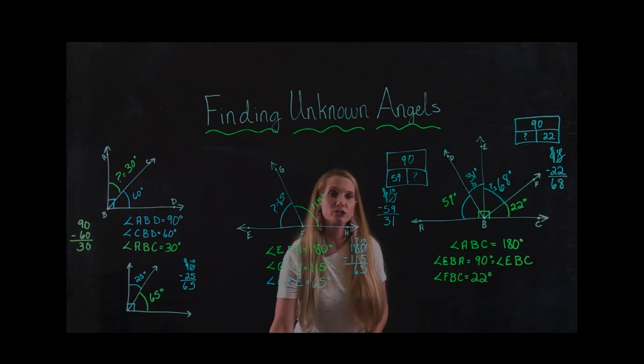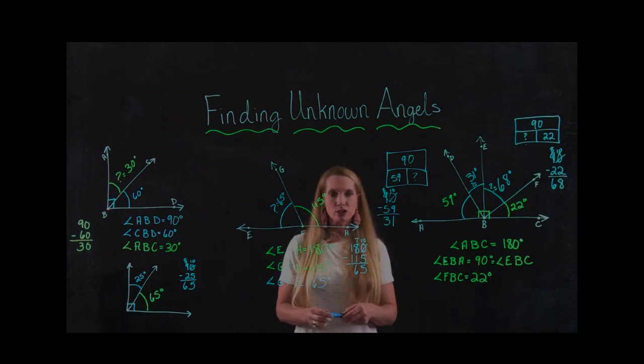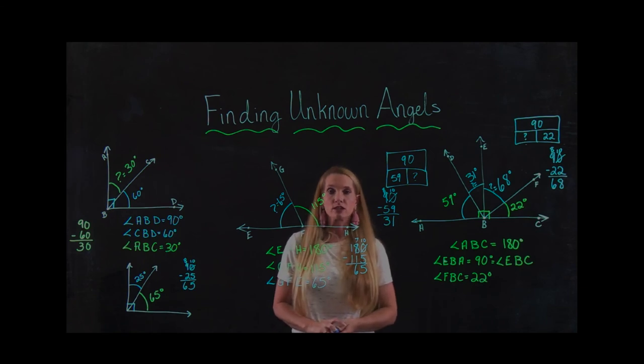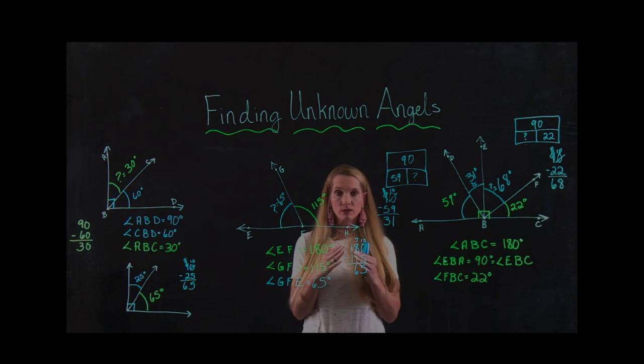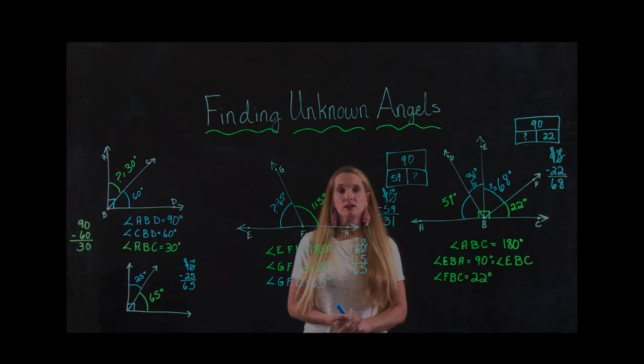So even though it looks hard to start off with and you've got all of these different angles going in different directions, it's not that hard. You just have to look for what you're given and then once you find out what you're given, then you can take what you know, what you're given, and either add or subtract to figure out what that missing angle or that unknown angle is.